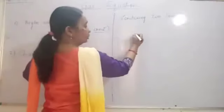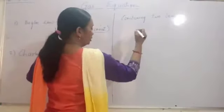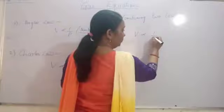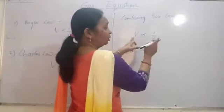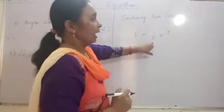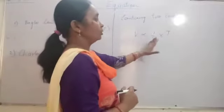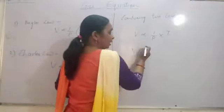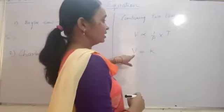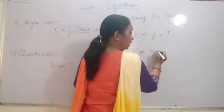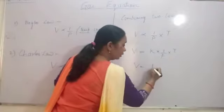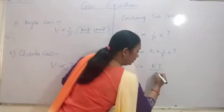According to Boyle's law, volume is inversely proportional to pressure, so V is inversely proportional to P. According to Charles' law, V is directly proportional to temperature T. Combining these, V is inversely proportional to P and directly proportional to T. Removing the proportionality sign and introducing constant K, we get V = K × T/P.